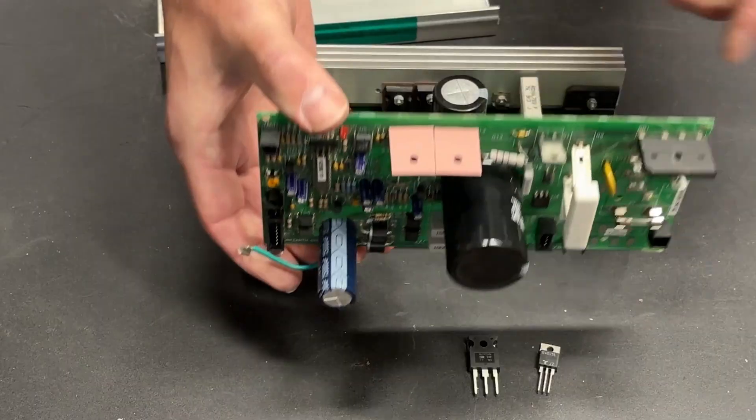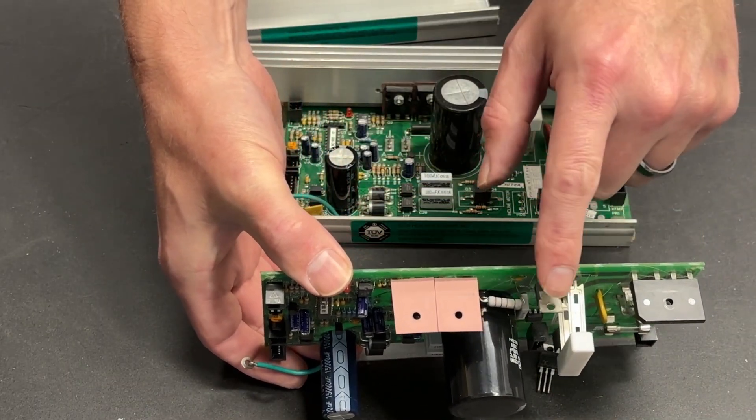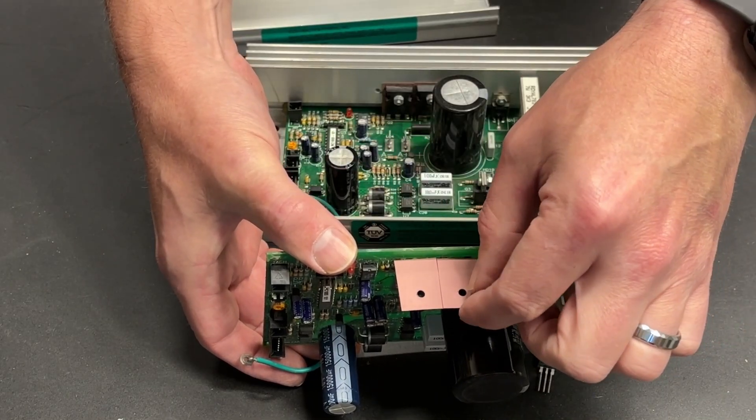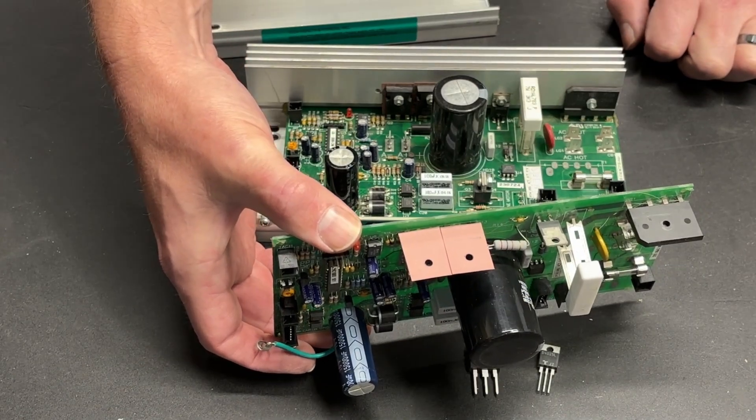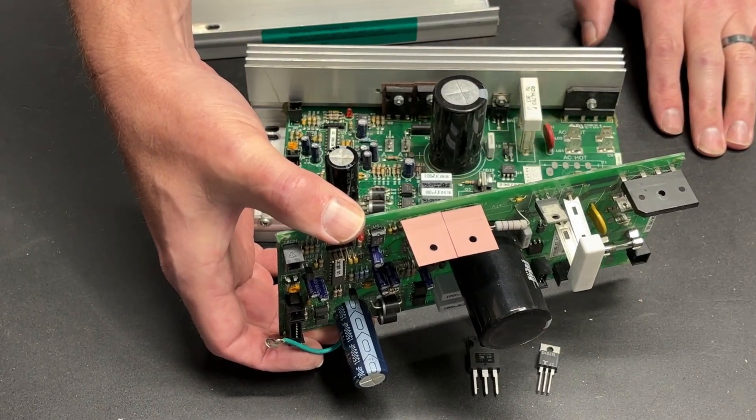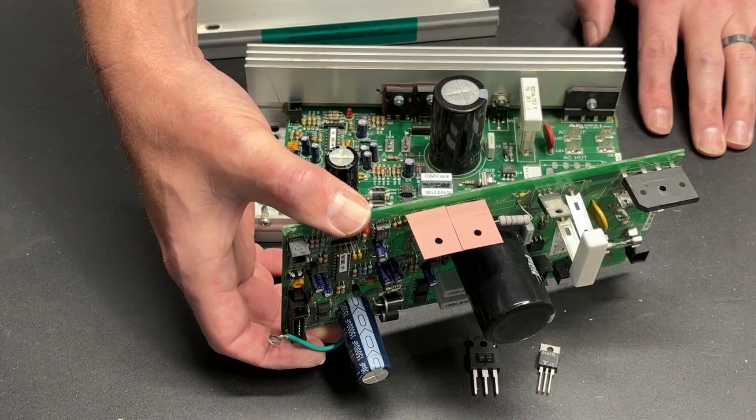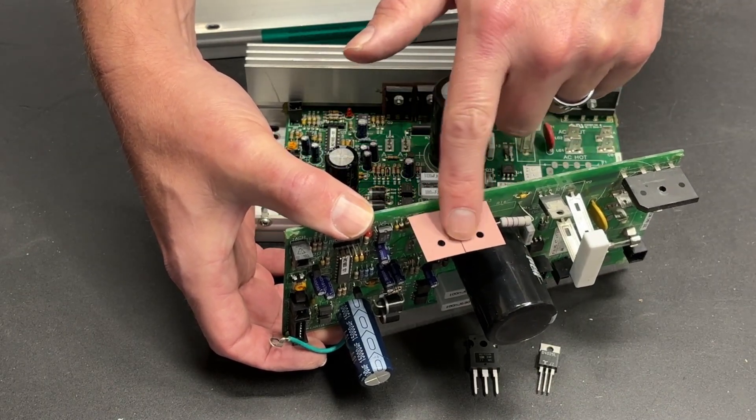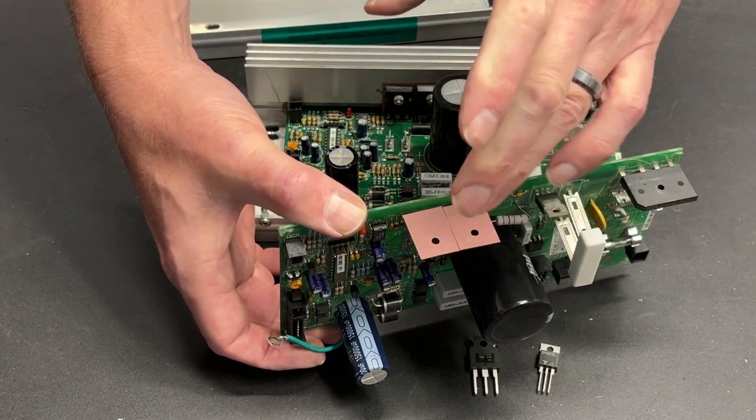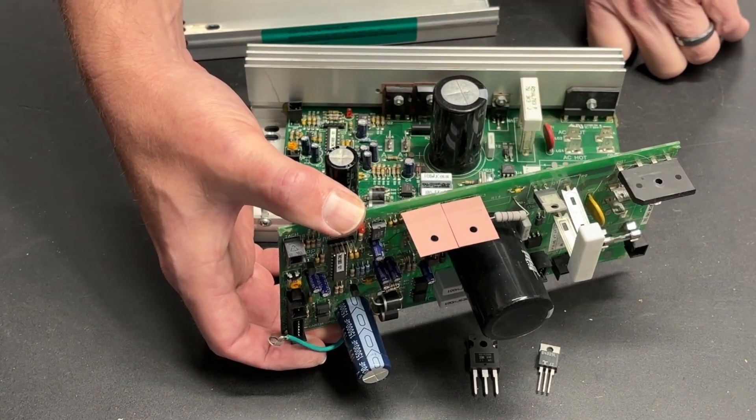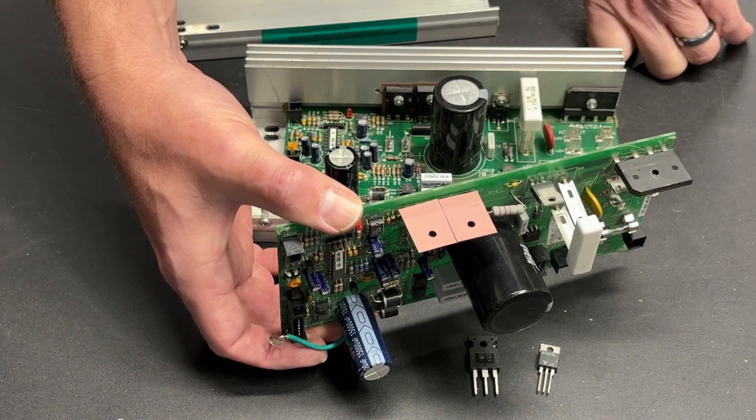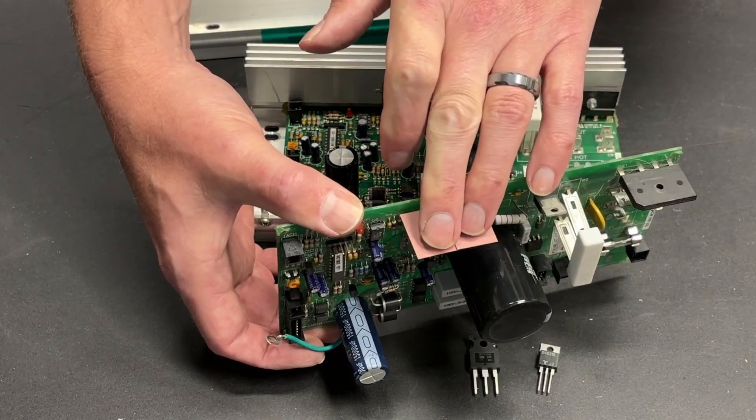A couple things to note. Rectifier doesn't have anything behind it. The SCR doesn't have anything behind it. The flyback diode and the MOSFET do have this insulative film. That is to insulate an electrical connection between these components and the body of the heat sink, but it conducts heat extremely well. So if you damage this, you pull this sticker off and it tears, you don't want to put electrician's tape between the body of the component and the heat sink, because while that will insulate against conductivity, it will not conduct heat very well, and you will be significantly shortening the life of these components.